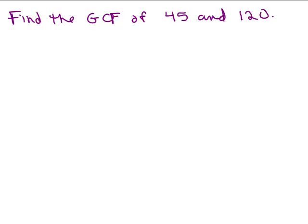We need to find the greatest common factor of 45 and 120. I'm going to use the upside-down division method. We put each of these numbers next to each other. Remember, you're looking for the greatest common factor — you're trying to find the biggest number that divides evenly into both 45 and 120. So this is the method if you can't do it in your head. You put the numbers next to each other and try to think of any number that will go into 45 and 120.